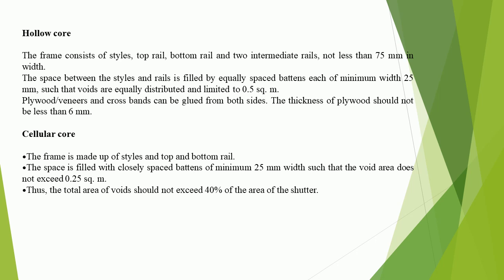Hollow core: the frame consists of stiles, top rail, bottom rail, and two intermediate rails, not less than 75 mm in width. The space between the stiles and rails is filled by equally spaced batons each of minimum width 25 mm, such that voids are equally distributed and limited to 0.5 square meters.